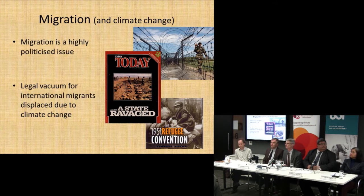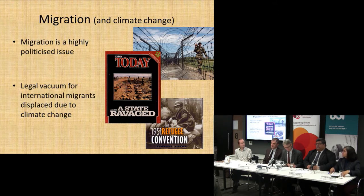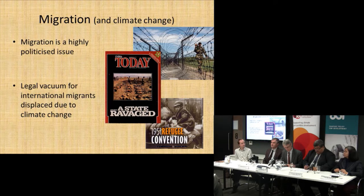Within this highly political situation, there is a legal vacuum for international migrants. Originally they were called refugees, but of course they do not come under the 1951 Refugee Act. There is nothing to protect migrants displaced from the impacts of climate change. There are some guiding principles on displacement, but there is no legal protection.